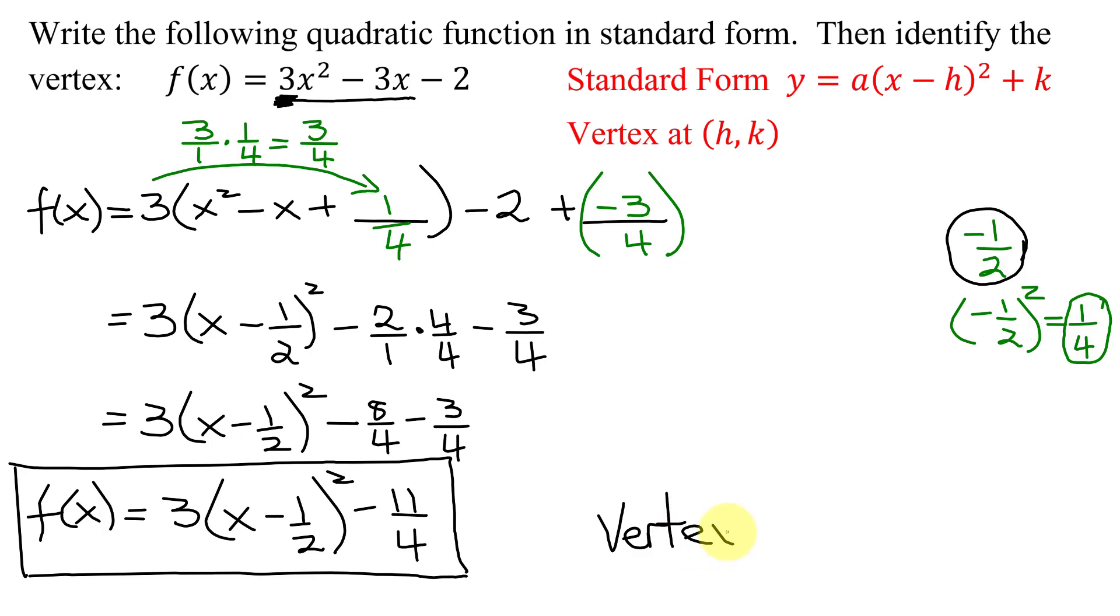The only thing I have to do now is find the vertex. The x-coordinate of the vertex is at the opposite of this value, so it's going to be at positive 1/2. The y-value of the vertex is at the opposite of this value, so it's just -11/4.